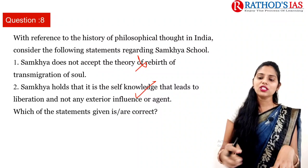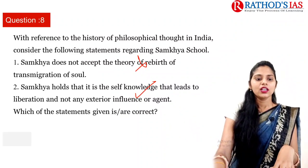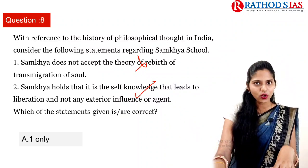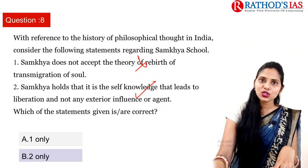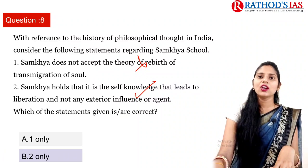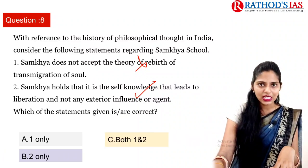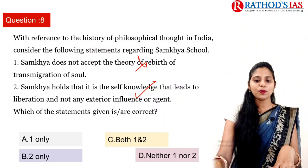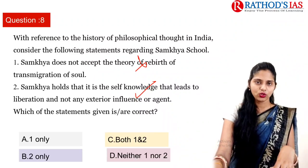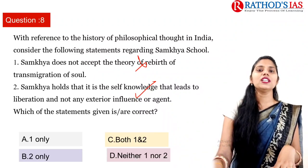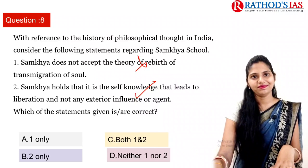The second statement says: Sankhya holds that it is self-knowledge that leads to liberation, and not any exterior influence or agent. According to Sankhya philosophy, knowledge is important for liberation — self-knowledge leads to liberation, not by any exterior agent. So the second statement is correct. Options: A is 1 only, B is 2 only, C is both, D is neither. The correct option is B — 2 only.